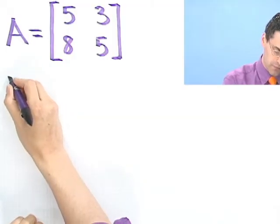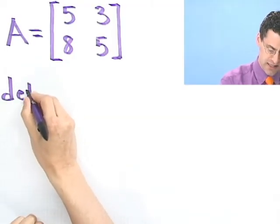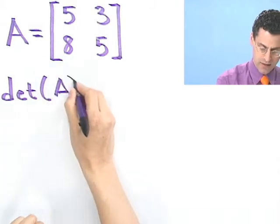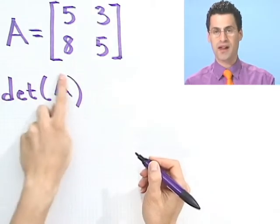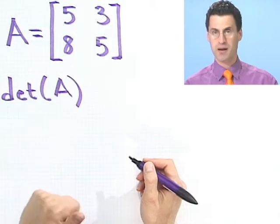OK, well now if I want to compute the determinant, remember the determinant is just a number associated with this matrix. First of all, let me show you what the notation is. Some people use just DET of A, and that stands for the determinant of A.